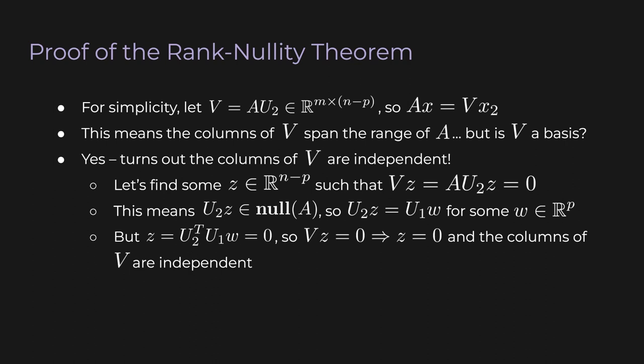Summarizing everything, if VZ equals zero, then Z must be the zero vector. In other words, the only linear combination of the columns of V that produces the zero vector, is when all the coefficients are zero, so the columns of V are independent. Going back, this means the columns of V are a basis for A. Now here's the punchline. There are N minus P columns in the matrix V, and those columns are independent, and those columns span the range of A. That means the rank of A is just N minus P. Moving P to the other side, and remembering that P is just the nullity of A, we have rank of A plus nullity of A equals N.